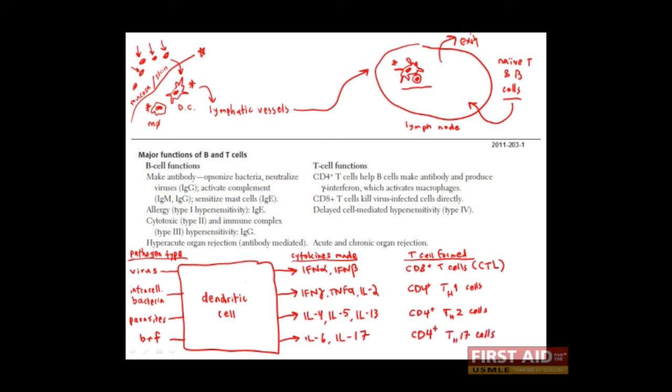So as you can see, each pathogen type is recognized by the dendritic cell and stimulates the production of a relatively unique combination of cytokines. Now, when these cytokines are produced in the lymph node, when dendritic cells come into contact with CD8 and CD4 T cells, you see that the result is a variety of T cells.